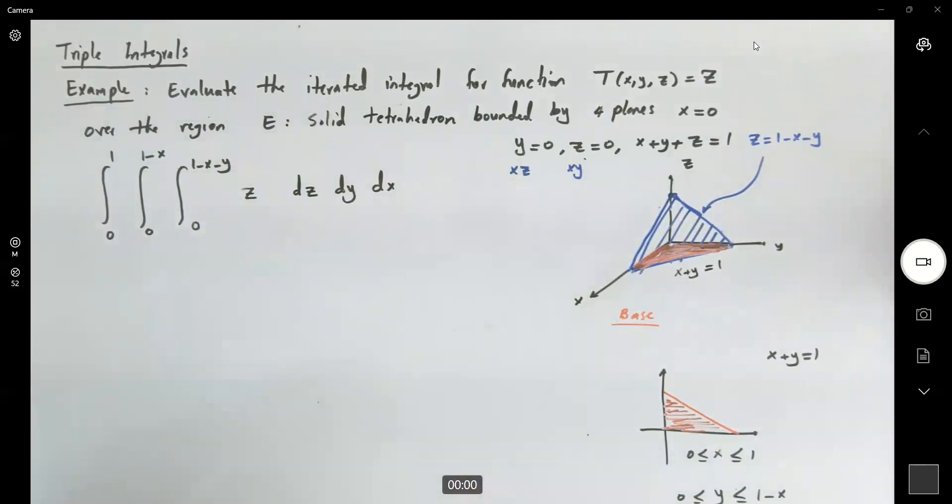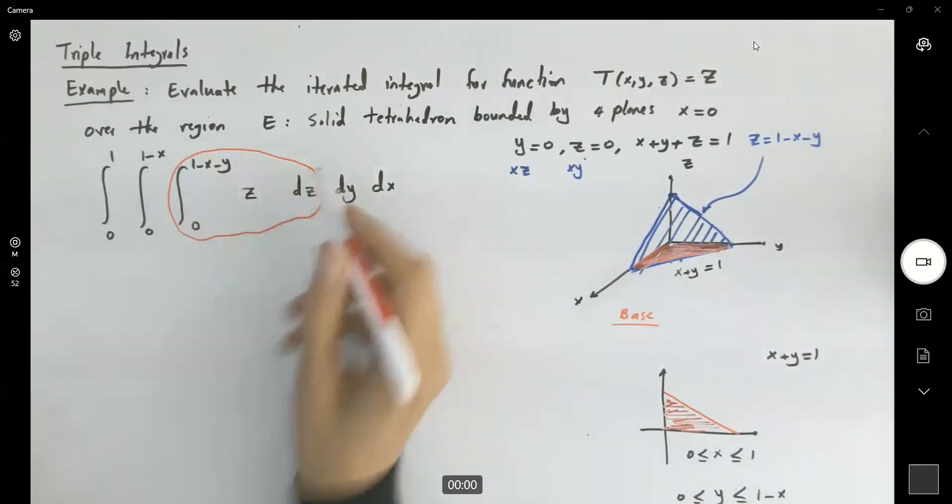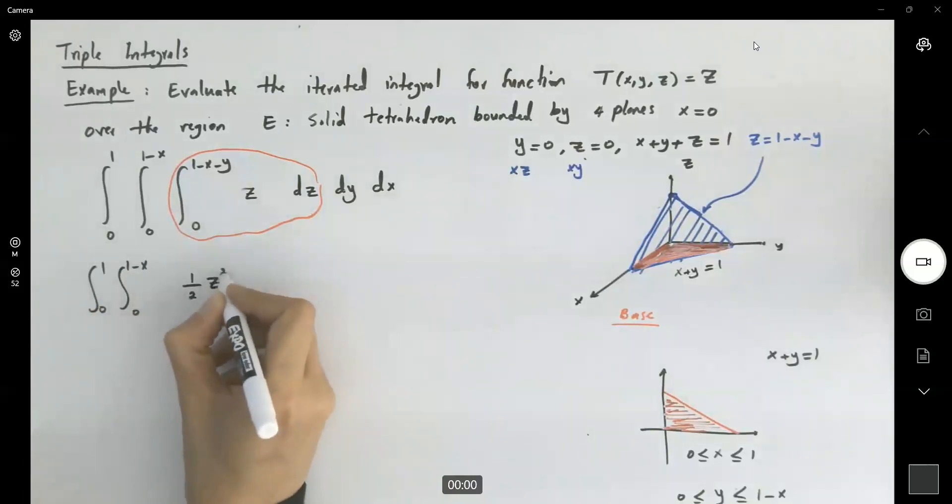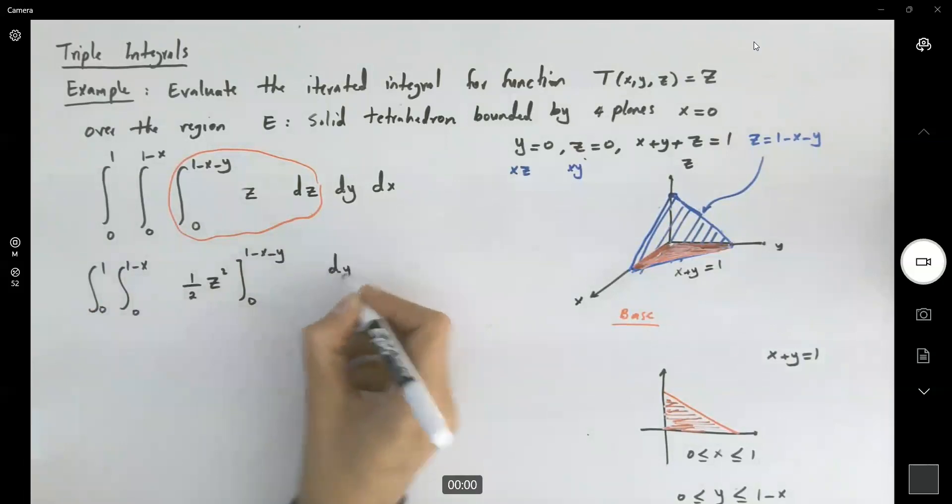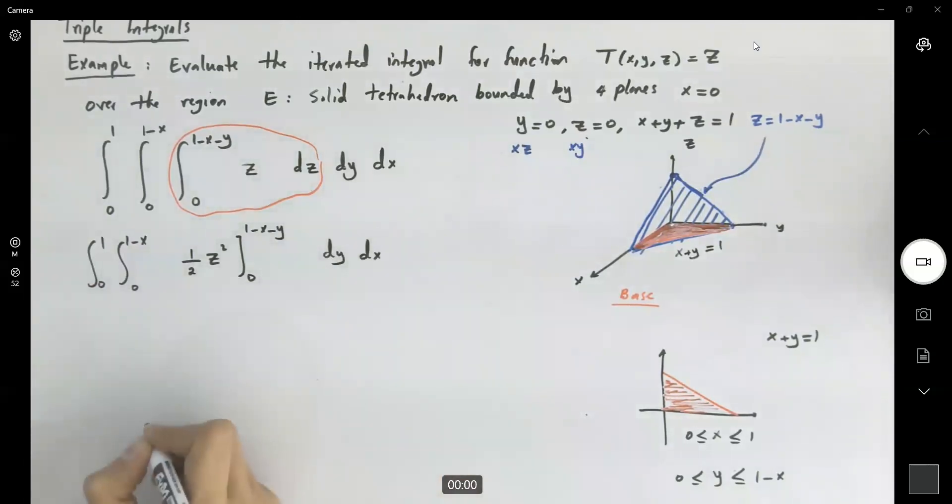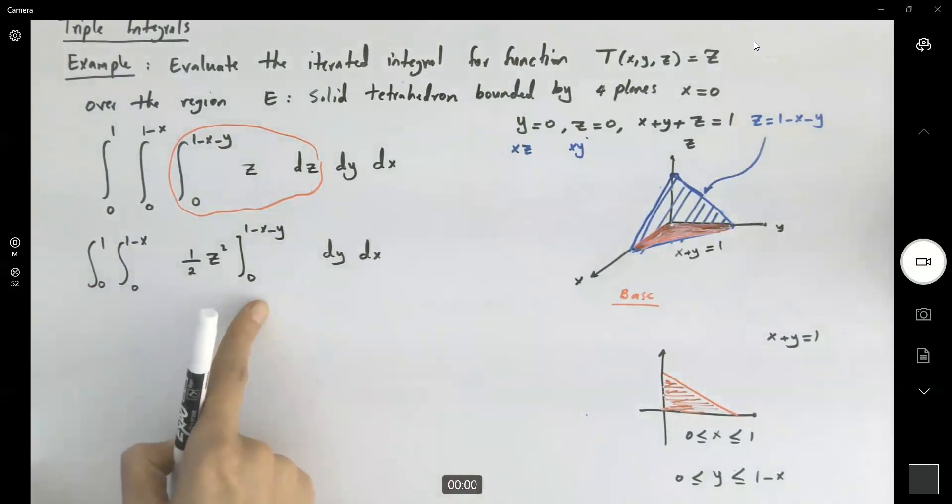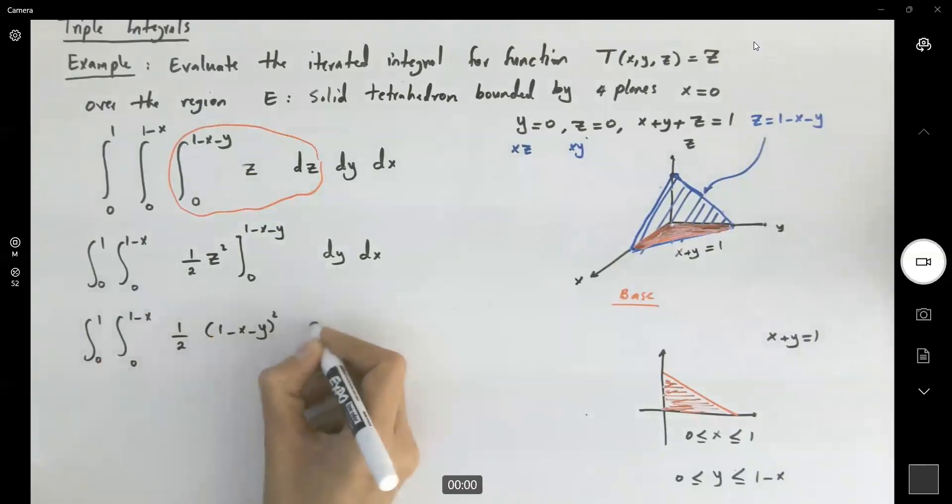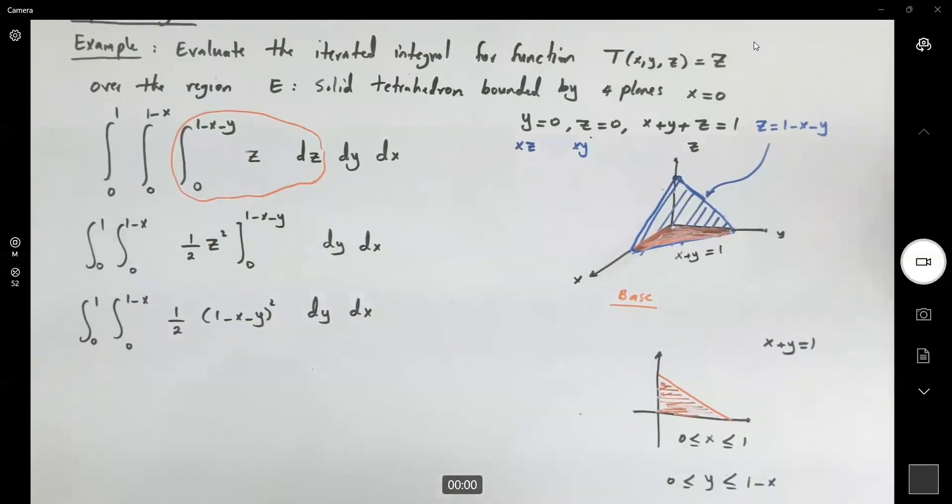Let's take the integral one by one. The inner integral first. So this becomes integral 0 to 1, integral 0 to 1 minus x. And this is just a half z squared, z is bounded between 0 and 1 minus x minus y, then dy, then dx. Here you just need a simple substitution. This is the integral 0 to 1, 0 to 1 minus x. Here you have a half, 1 minus x minus y to the second, dy, dx. You can take this half and write it in front of your integral for simplicity.